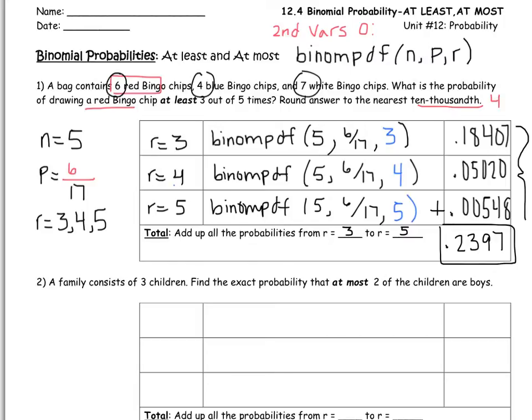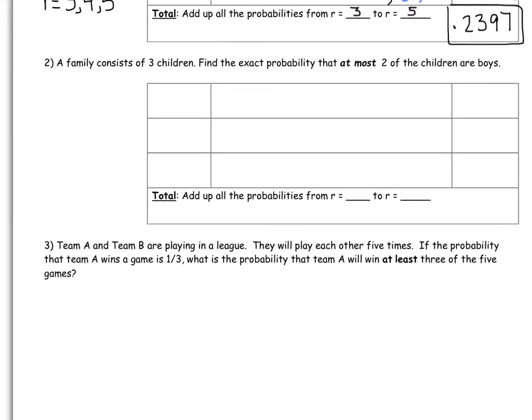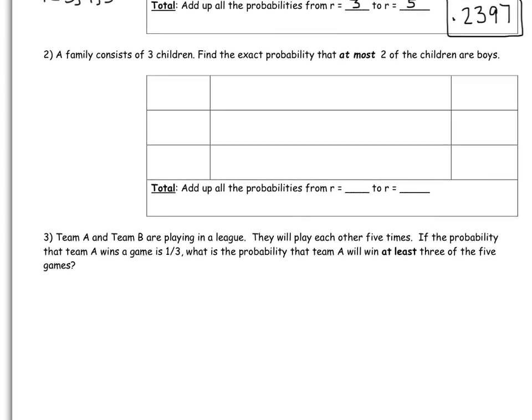Let's try example number two. A family consists of three children. Find the exact probability that at most two of the children are boys. So what is my n? Let's start there. Well, the family consists of three children, so that's my total. What is the probability that I would get a boy? Well, you have a 50-50 chance. You're either going to have a boy or a girl. So the probability of getting a boy is one half.